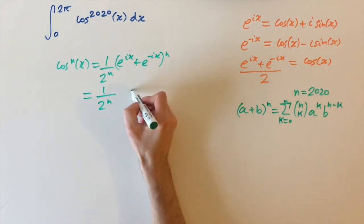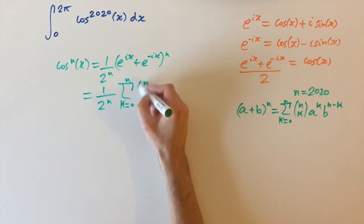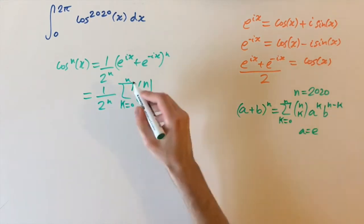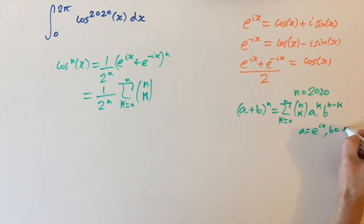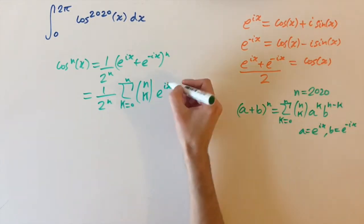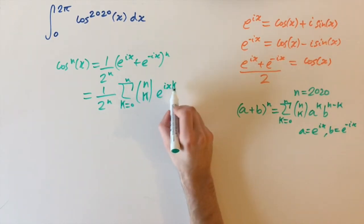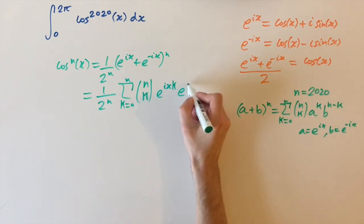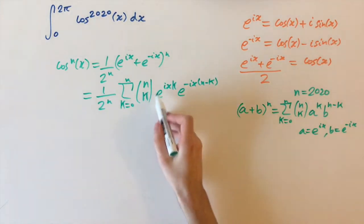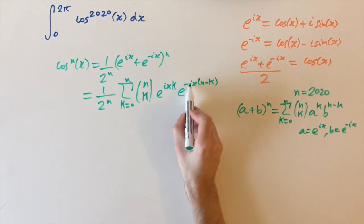Applying this formula gives us one over two to the n times the sum from k equals zero up to n of n choose k. Setting a equals e to the ix and b equals e to the minus ix, we get e to the ix times k and e to the minus ix to the power of n minus k. Since these have the same base, we can combine the powers by adding or subtracting.